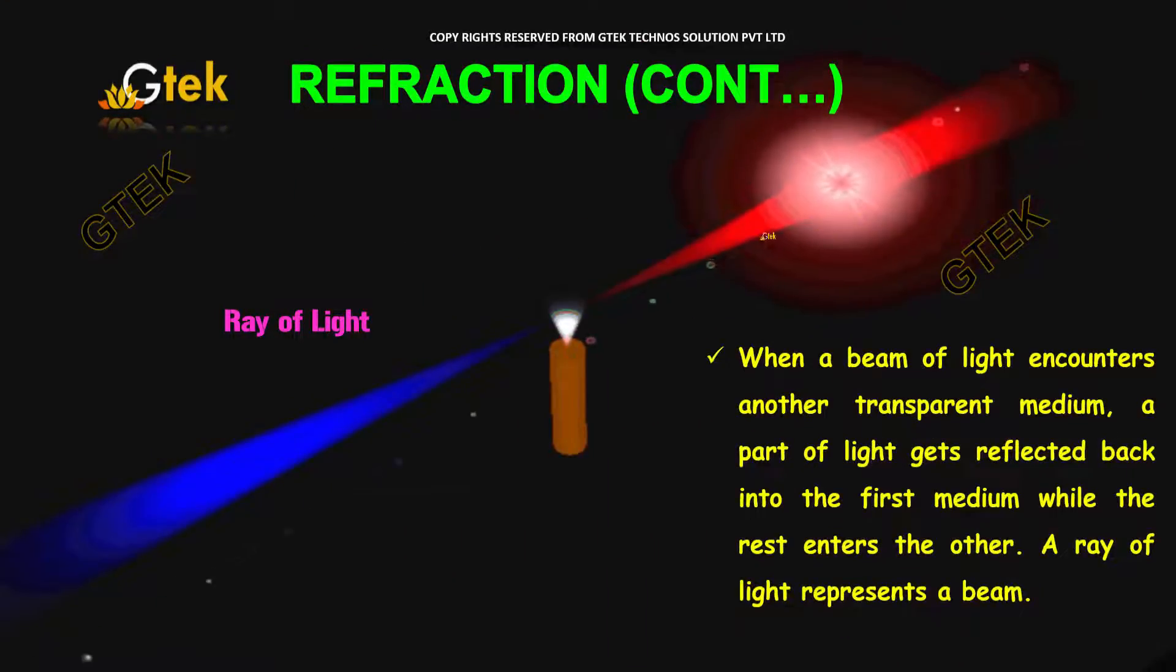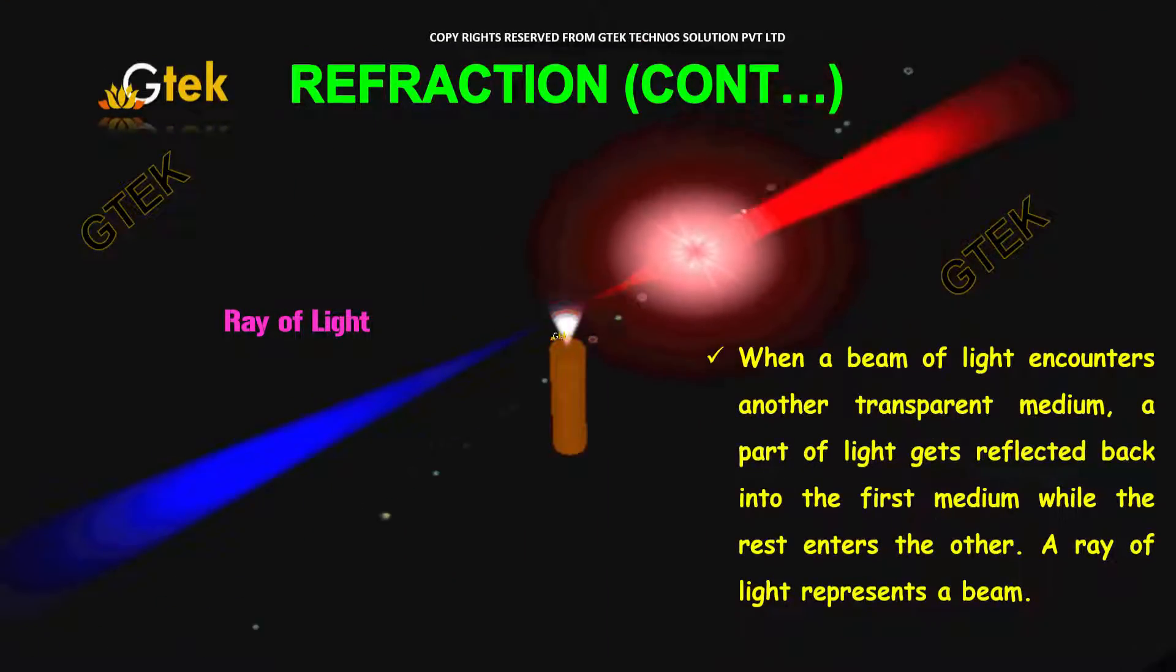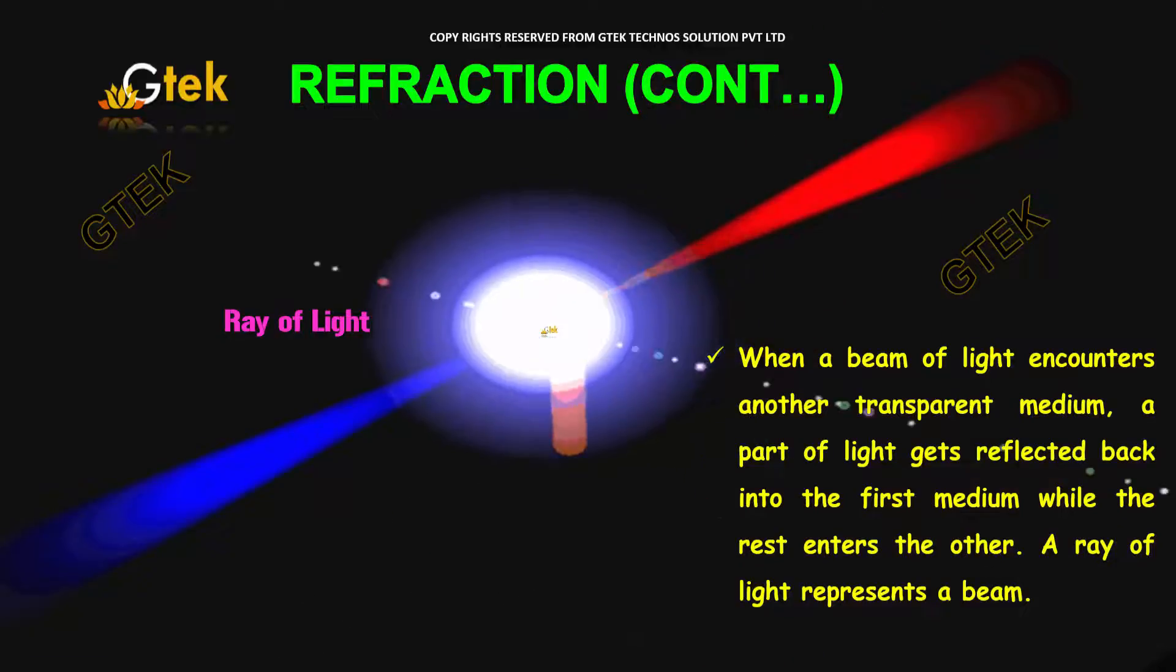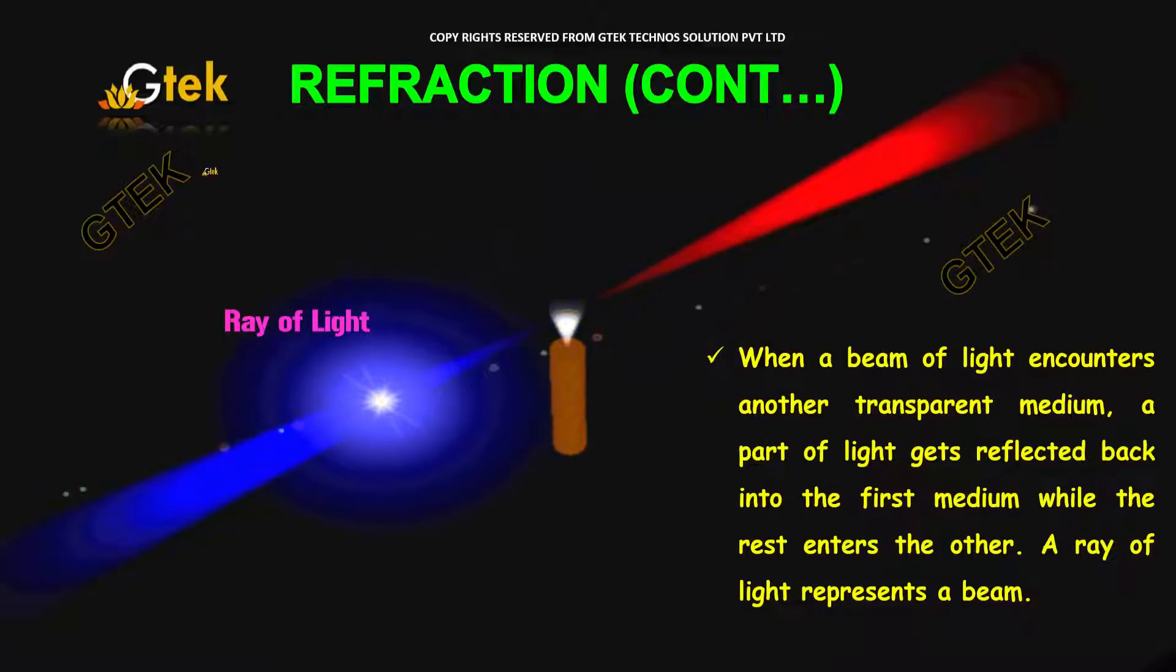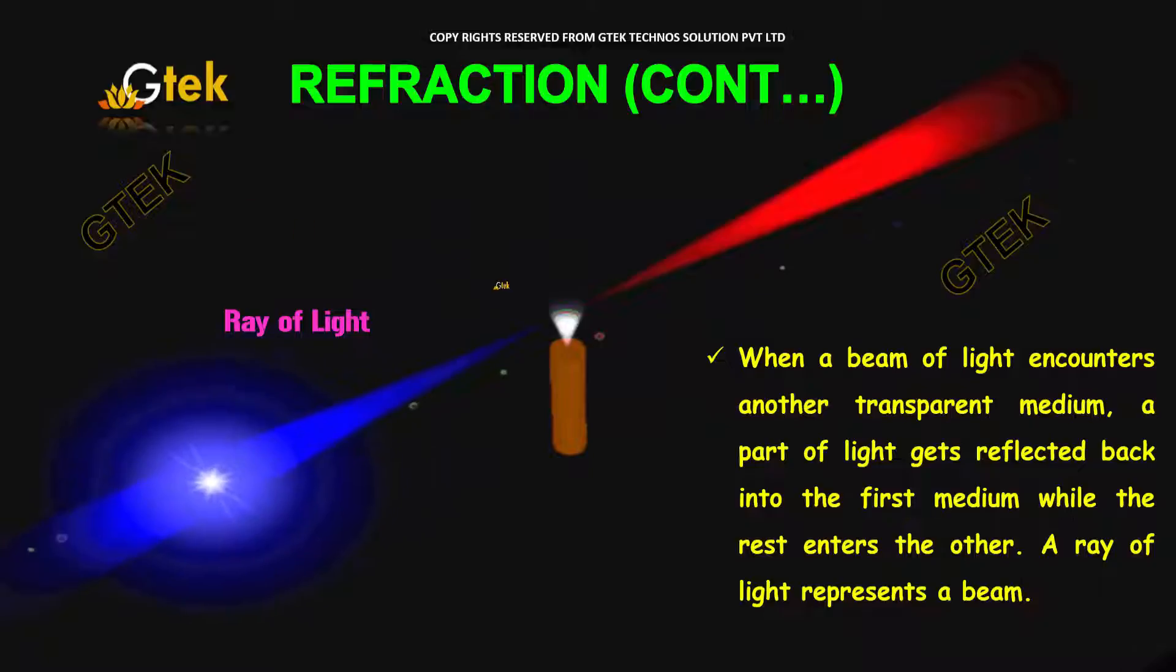When a beam of light encounters another transformed medium, a part of the light will get reflected back into the first medium while the rest enters the other.